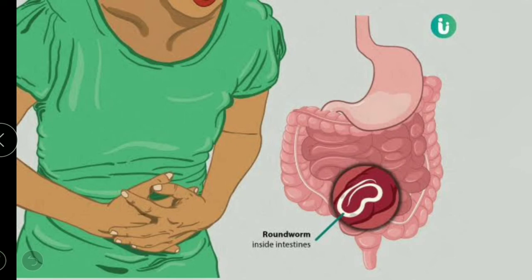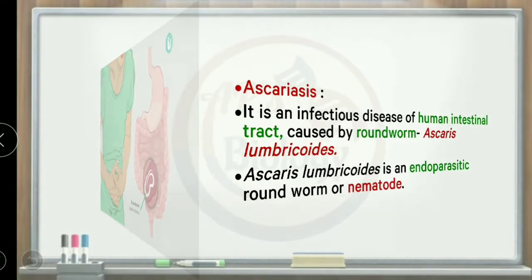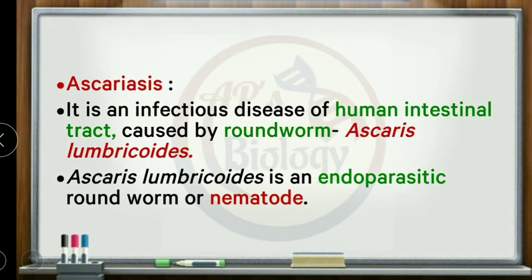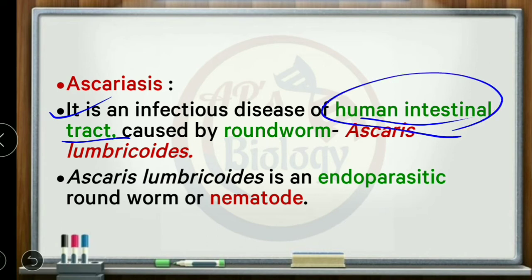The next disease is ascariasis. Ascariasis is caused by a roundworm (a nematode). The first two pathogens discussed were protozoa: Plasmodium (malaria) and Entamoeba histolytica (amoebic dysentery). Ascariasis is an infectious disease affecting the human intestinal tract, caused by the roundworm Ascaris.